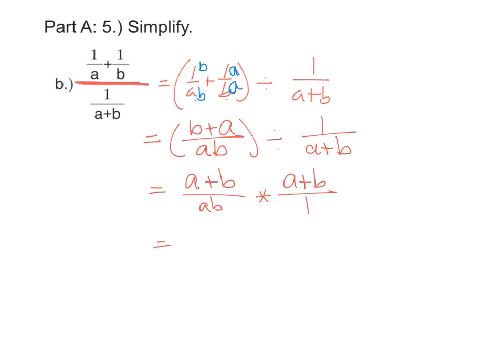We want stuff to cancel. We always want stuff to cancel. However, nothing is going to cancel here. Both of those a plus b's are in the numerators. They're not going to cancel with each other. So we're left with a plus b squared over a times b. And that is our simplified fraction.